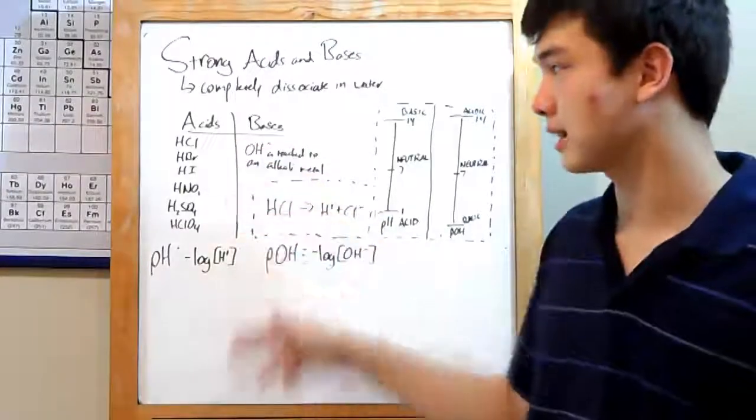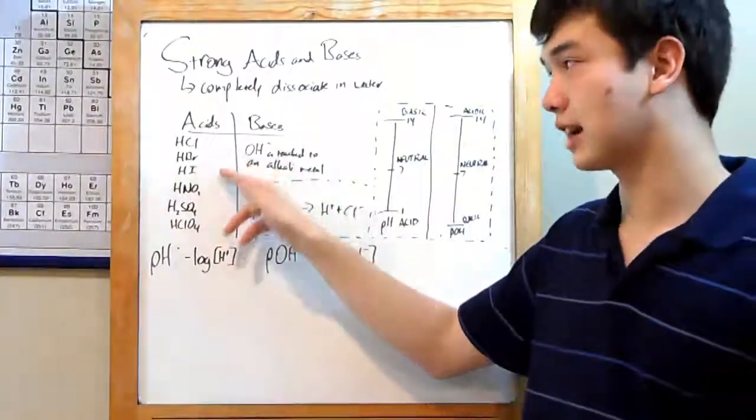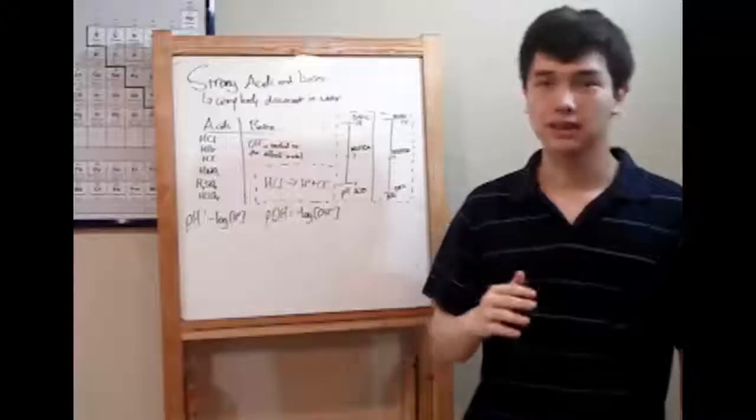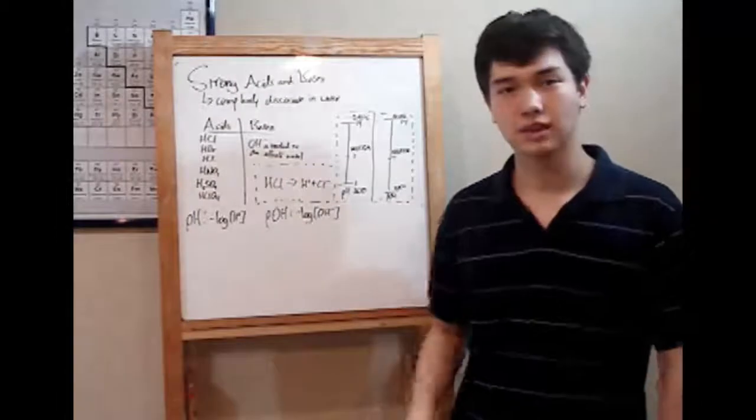This is the list of strong acids over here: hydrochloric acid, hydrobromic acid, hydroiodic acid, nitric acid, sulfuric acid, and perchloric acid. You might not need to know the names of all of them, but definitely know the chemical formulas.